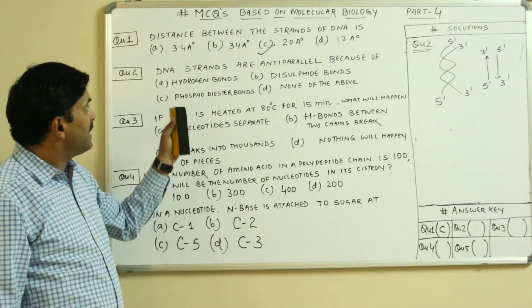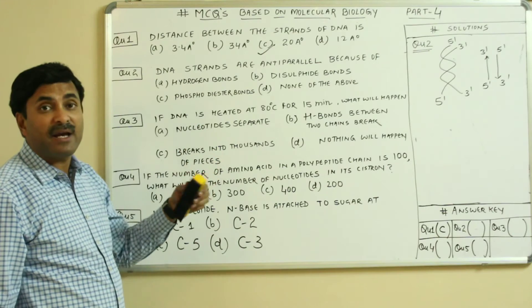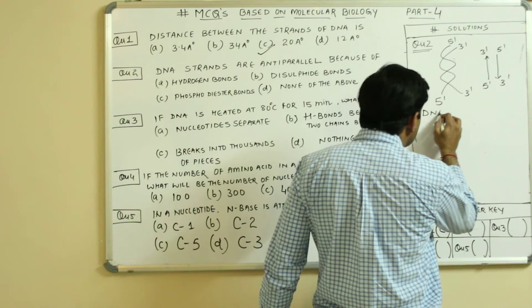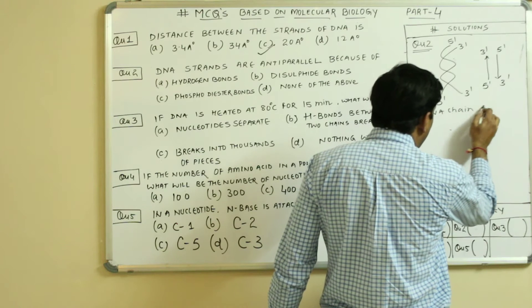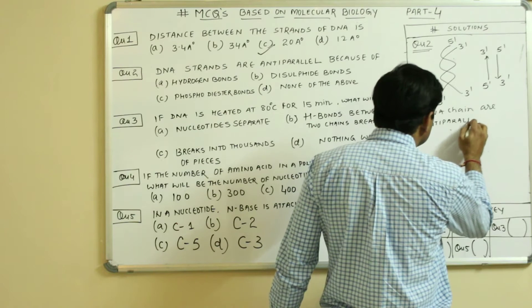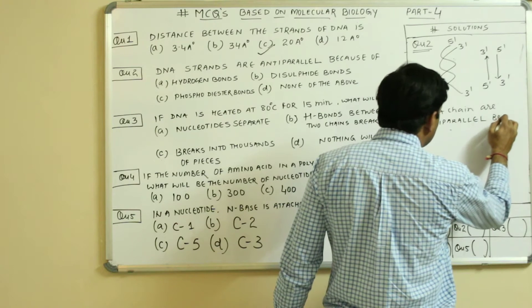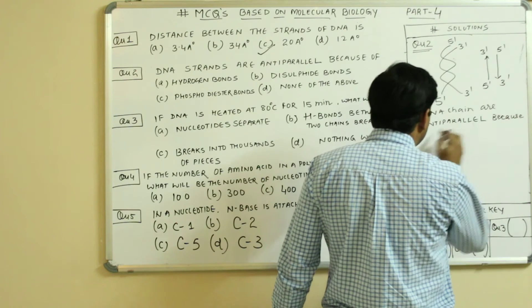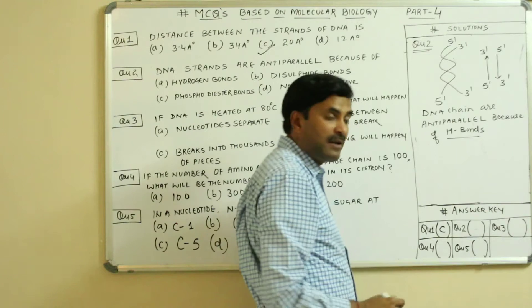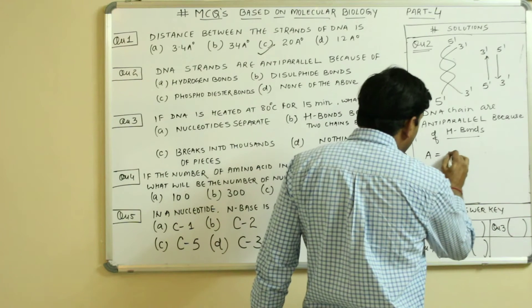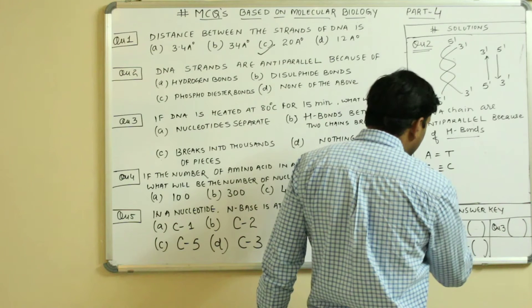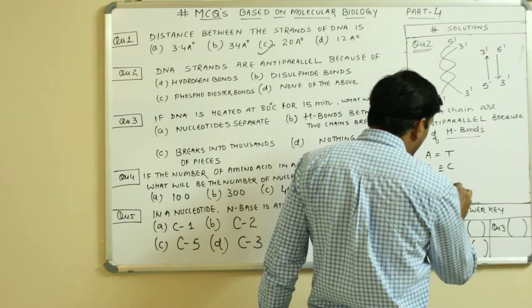The question asks: DNA strands are anti-parallel because of which bonds? The DNA chains are anti-parallel because of hydrogen bonds. Between the nitrogen bases, hydrogen bonds are present.